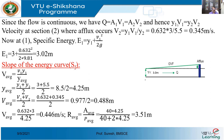With these values, let us calculate the specific energy at section 1-1. Specific energy E1 = y1 + v1²/(2g) = 3 + (0.632)²/(2 × 9.81). E1 works out to be 3.02 meter.